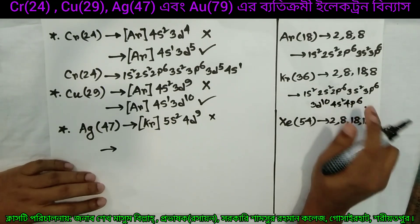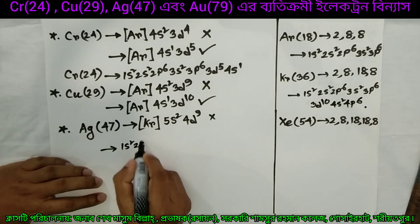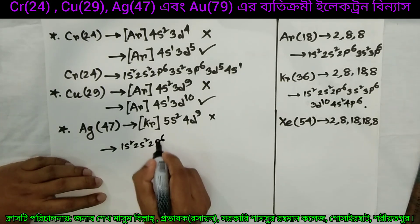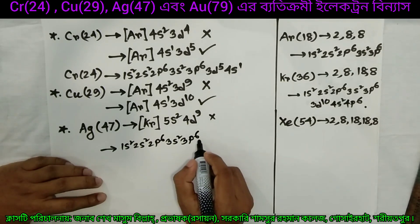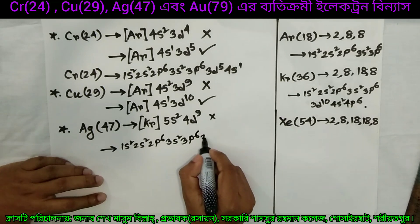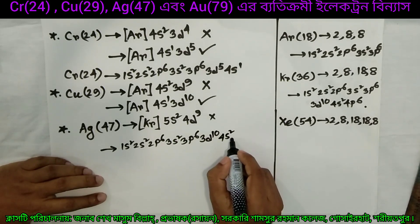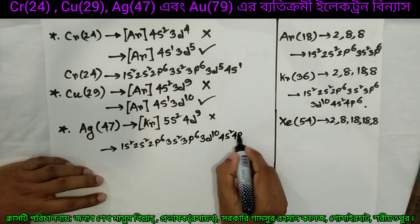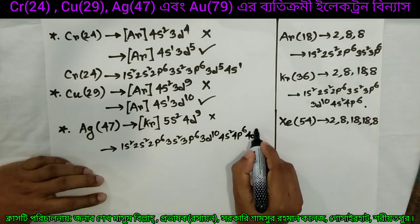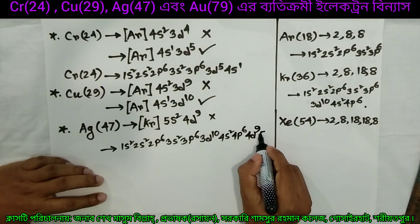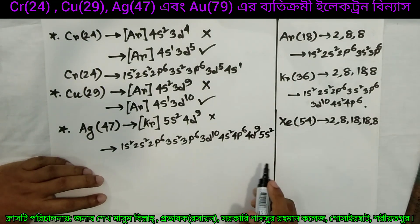So I am going to write: 1s2, 2s2, 2p6, 3s2, 3p6, 3d10, 4s2, 4p6. Then I am going to add 4d9, 5s2. This gives the full electron configuration for silver.